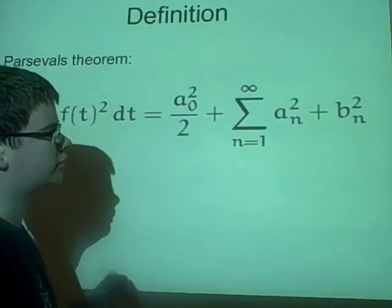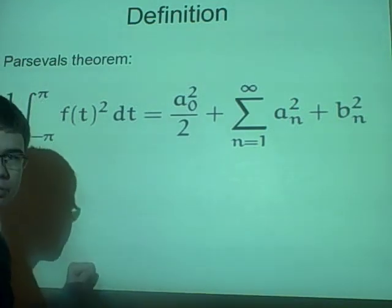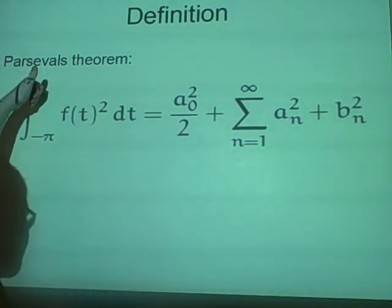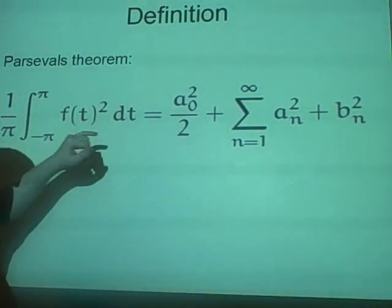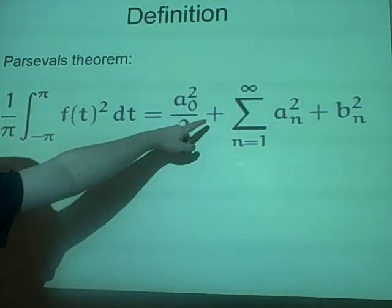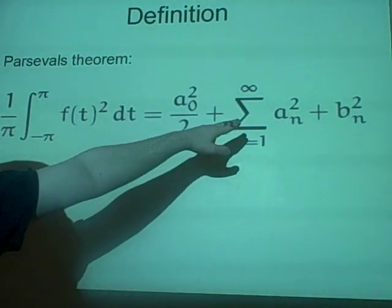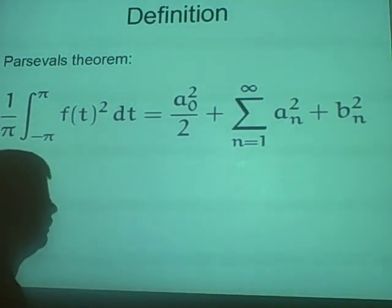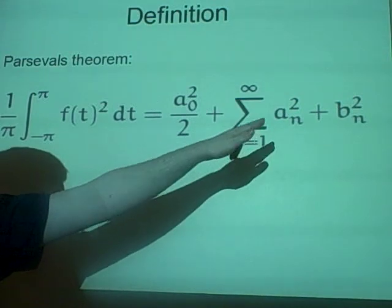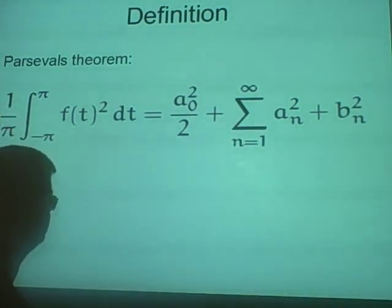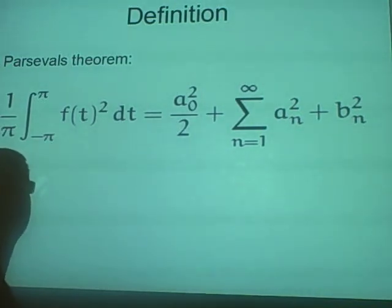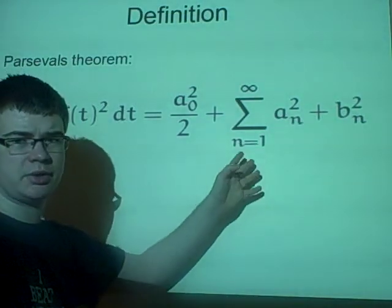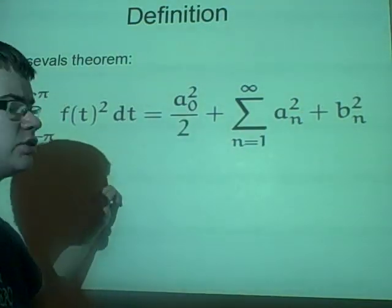So let's have a look. First off, Parseval's Theorem is this: 1 over π times the integral between π and minus π of f(t) squared dt equals a₀ squared over 2 plus the sum from n equals 1 to infinity of aₙ squared plus bₙ squared. This can be derived from the normal Fourier series equation. All you do is add in the integral signs, and where there's normally cosines and sines, we've just squared things, so cosine squared plus sine squared is 1.